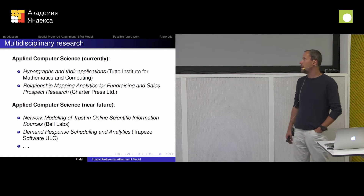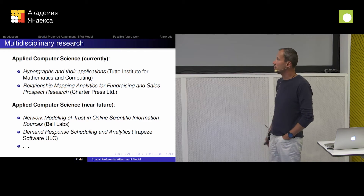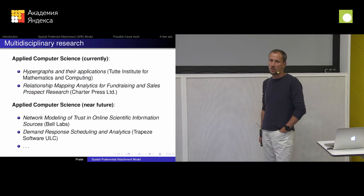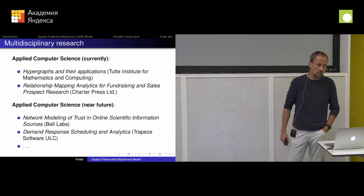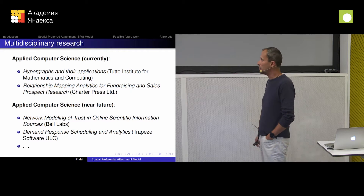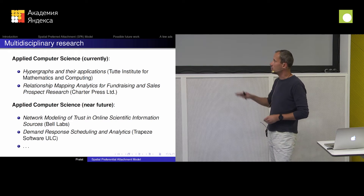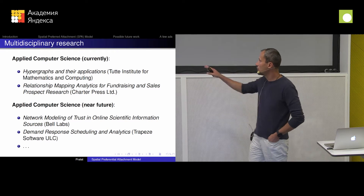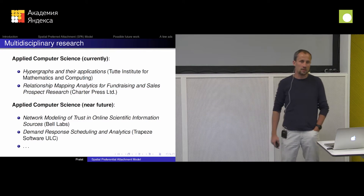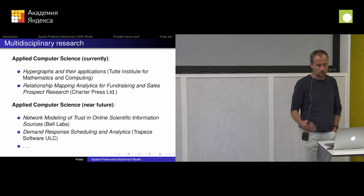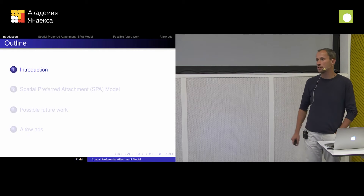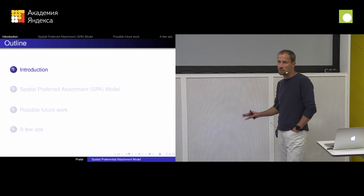Currently I'm working with the government of Canada, mostly on hypergraphs and little companies in Canada as well. We're about to start a project with Bell Lab, which is based in the US. It's a very prestigious, very strong company in optimization — they want to optimize their schedules that they are doing for others. So that's just a little background on myself, mostly focusing on the applied stuff, which is a little bit strange to me.